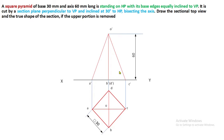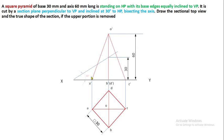This is our simple position of the solid. Now we proceed to the section plane. What is the section plane condition? It is inclined at 30 degrees to HP and bisecting the axis. Bisecting means equally divided into 2. The axis height is 60 mm, so it has to be cut at 30 mm from the base — 60 divided by 2 equals 30. Mark 30 mm from the base and draw a line at 30 degree inclination passing through this 30 mm point, bisecting the axis equally into 2 halves.